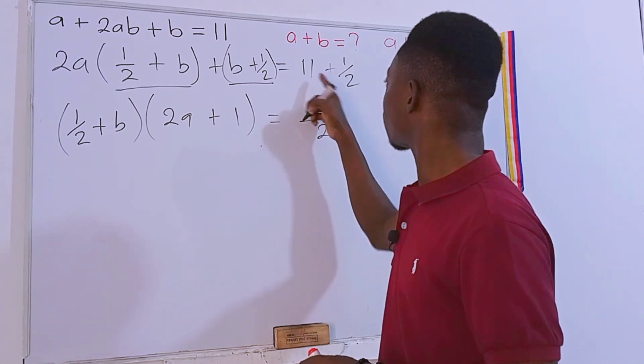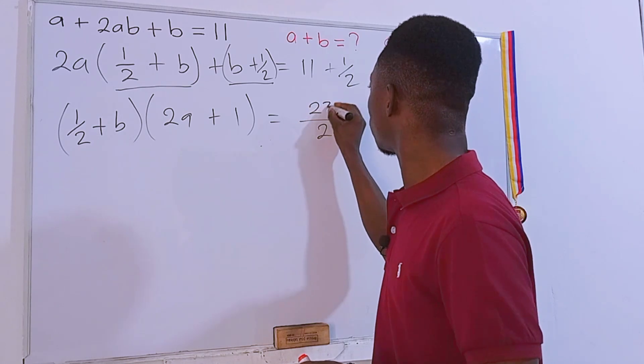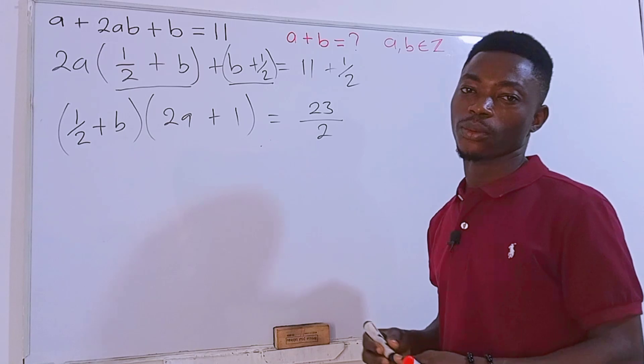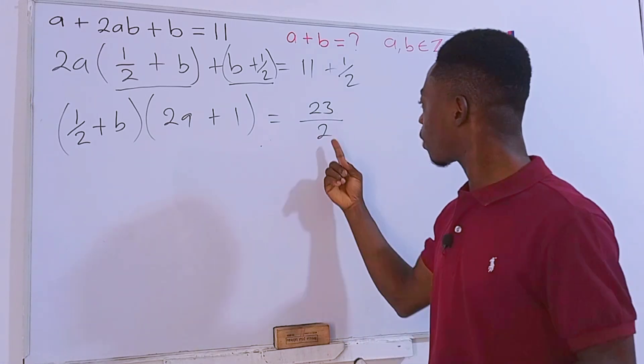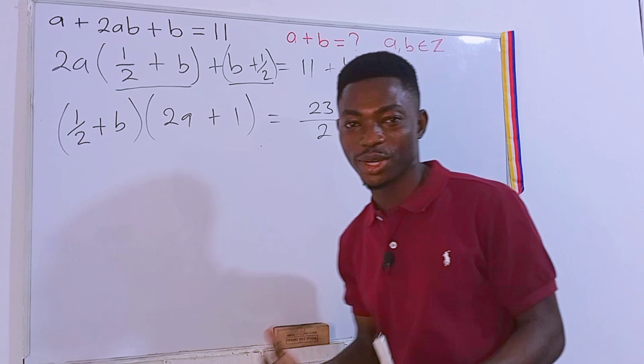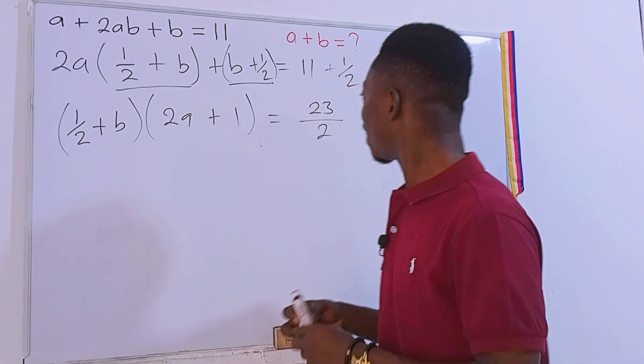Let's simplify this. The LCM is 2. 2 times 11 is 22 plus 1 is 23. This is what we have for now.